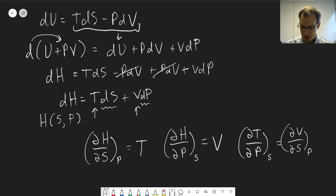So we get these relationships from the same process we did for du in the previous video. So go and check that out if you're not sure where these are coming from. And so these are some relationships that we can derive from enthalpy. This is our next Maxwell relation.